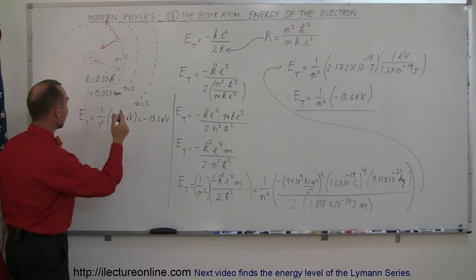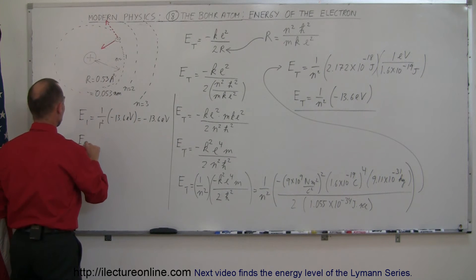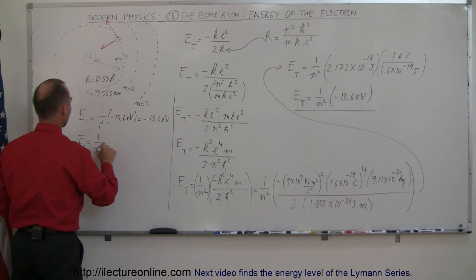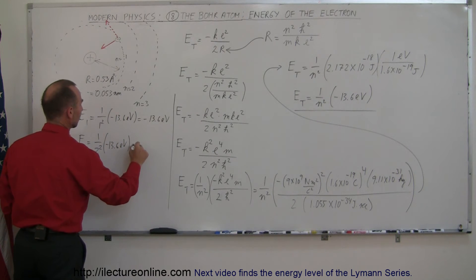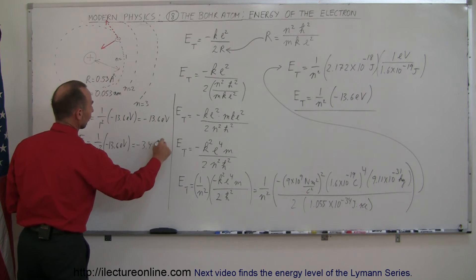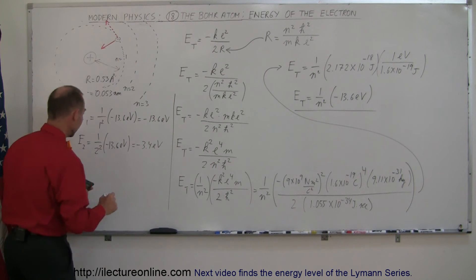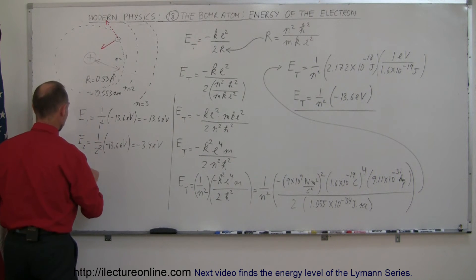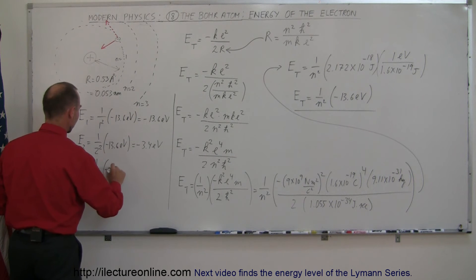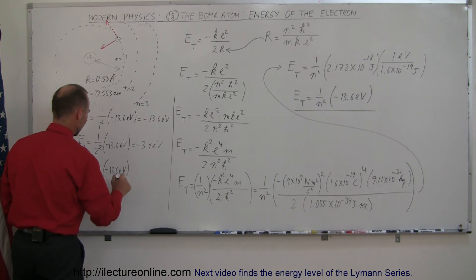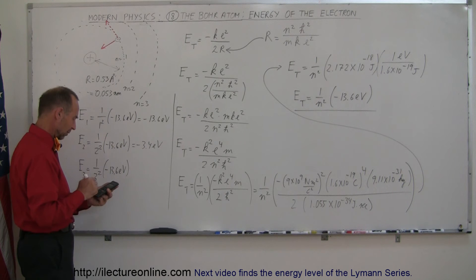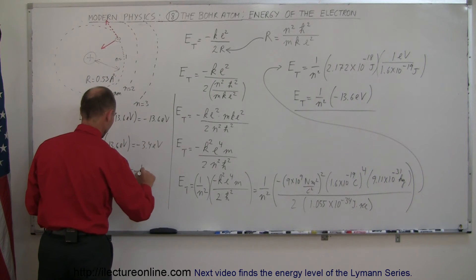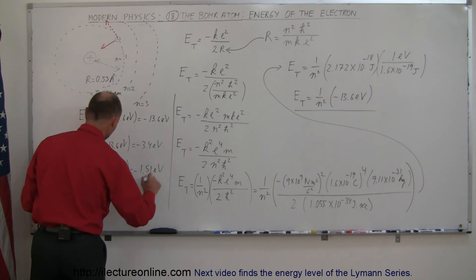For the second level, E2 equals one over two squared times minus 13.6 electron volts, which equals minus 3.4 electron volts. For the next level, E3 equals one over three squared, which is one over nine, times minus 13.6 electron volts. 13.6 divided by 9 gives us minus 1.51 electron volts.